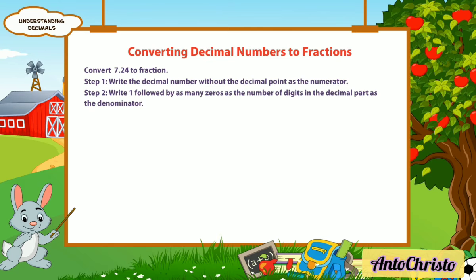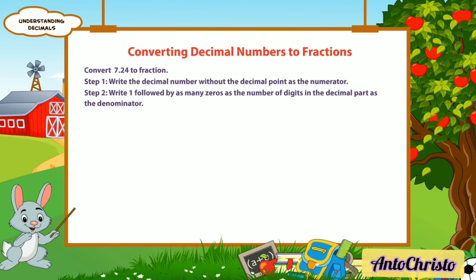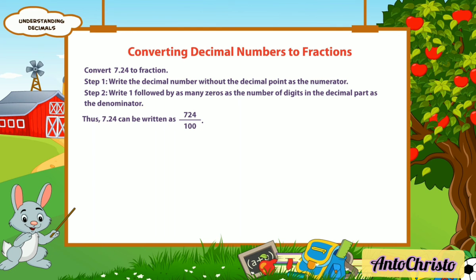Step 2: Write 1 followed by as many zeros as the number of digits in the decimal part as the denominator. Thus, 7.24 can be written as 724 by 100.